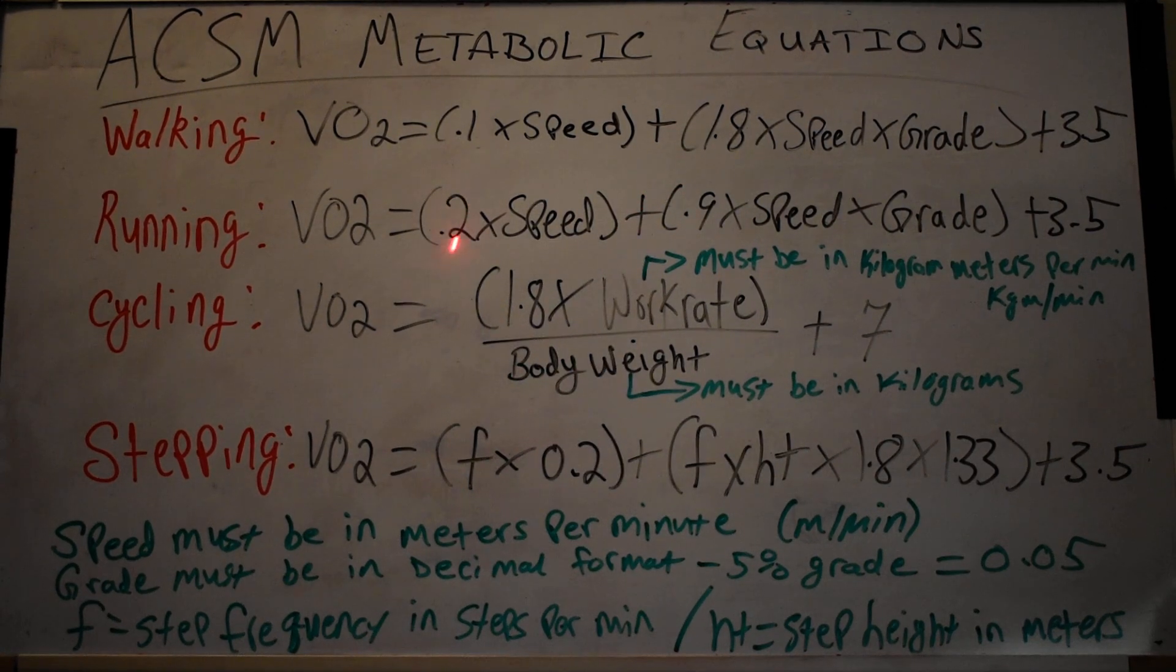The cycling equation: VO2 = 1.8—any of the numbers up here that I have as numbers, those are constants. Those will not change. What will change are speeds, grades, work rates, body weights, frequencies. In the cycling equation, I'm pointing out the caveats here first: your work rate has to be in kilogram meters per minute. You may see that abbreviated as kgm/min or kg/m/min—it's the same thing.